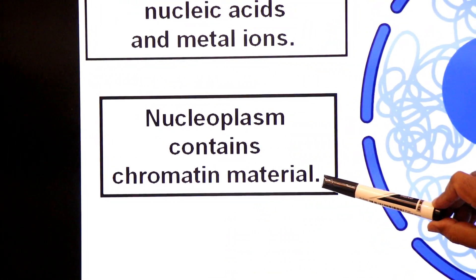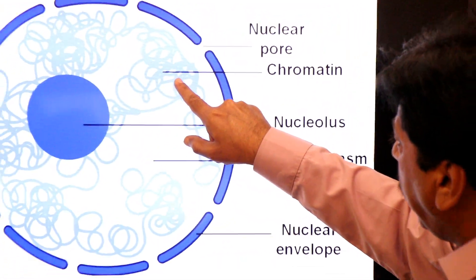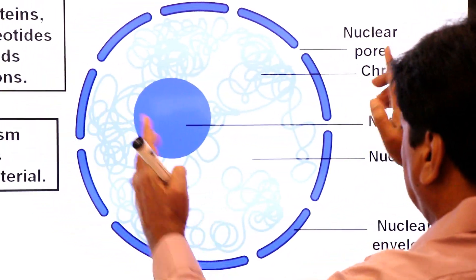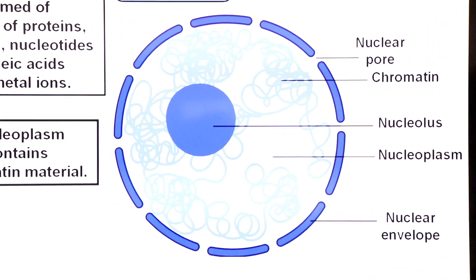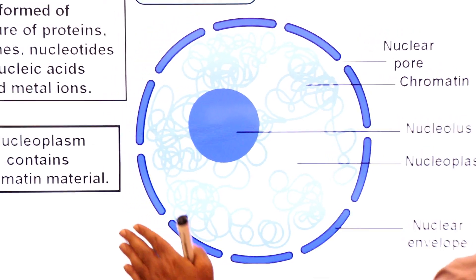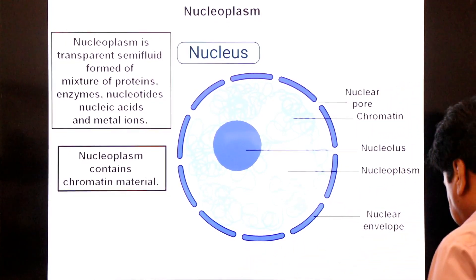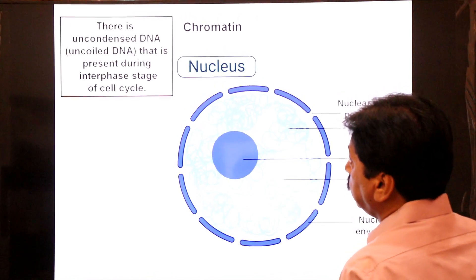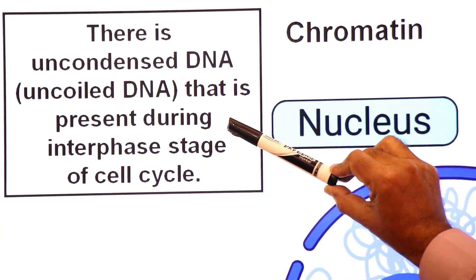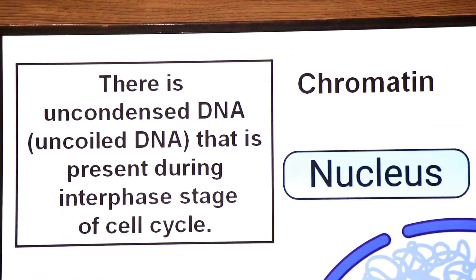The nucleoplasm contains chromatin material. During the resting stage — the interphase — the DNA is in an uncoiled form, and this uncoiled form is called chromatin. There is an uncondensed DNA, meaning uncoiled DNA, that is present during the interphase stage of the cell cycle.